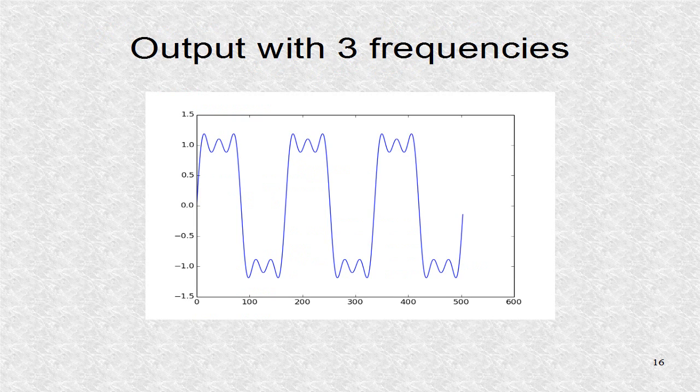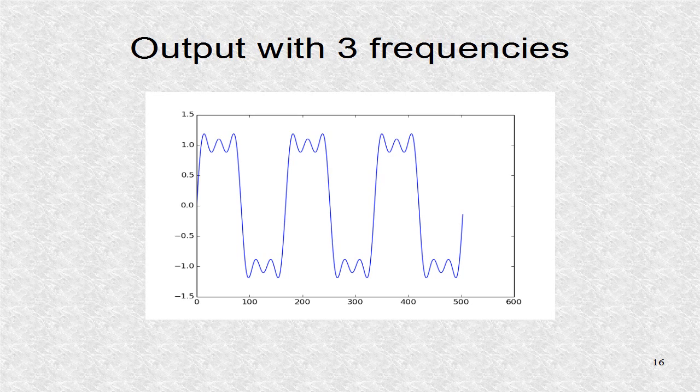This is the graph of the wave with three frequency components. It is more square like. Note it is not between minus 1 and plus 1, but has overshoots.